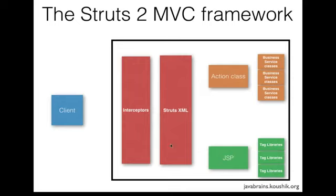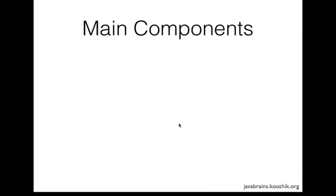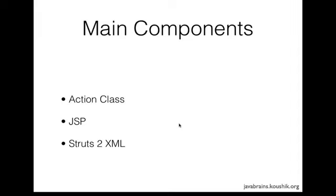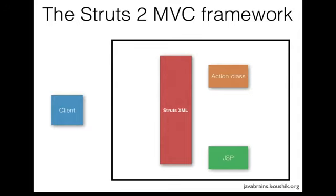So having eliminated all these components, we are left with three main components: the action class, the JSP, and the struts.xml. These are the three components that we're going to write in our simple Struts2 application, and we're going to see how they interact with each other.